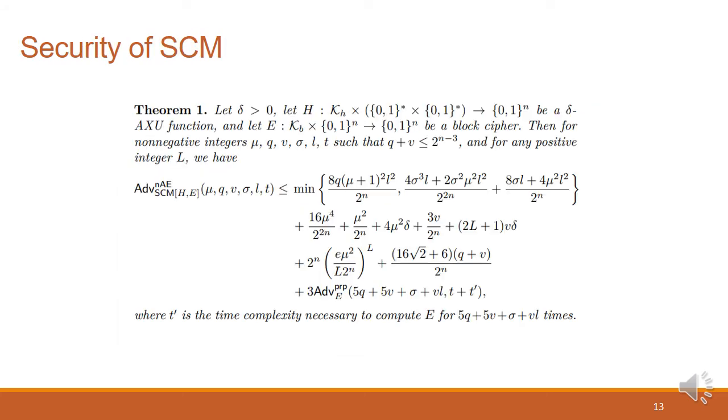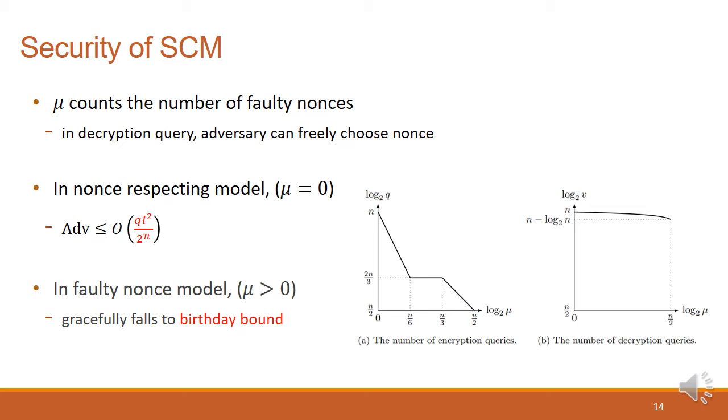And here is our result on the security of SCM. Since the result theorem is quite complex, let us briefly introduce it. In the result, mu counts the number of faulty nonces in encryption queries. Note that adversary can freely choose nonces in the decryption queries. If we focus on nonce-respecting model, or mu equal to 0 in other words, the advantage can be upper bounded with the form of q times L square over 2 to the N. Also, in faulty nonce model, so if mu is larger than 0, the security gracefully falls to birthday bound as you can see in the graph.